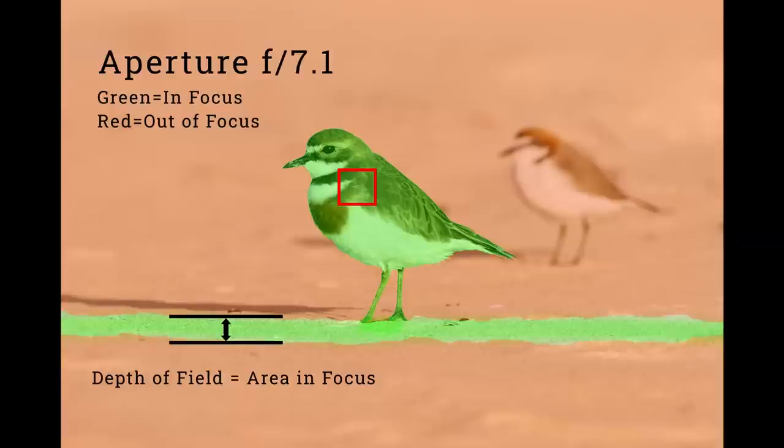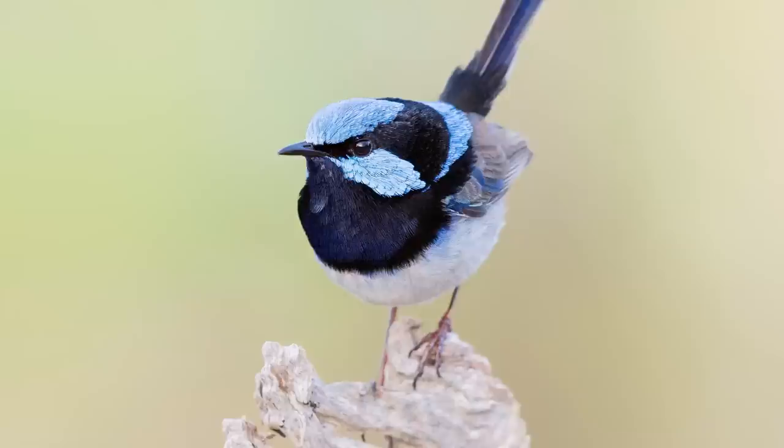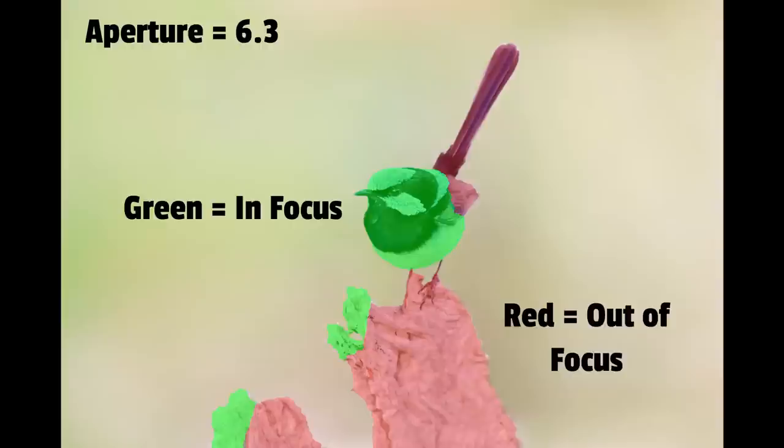The obvious question is why don't we just leave our aperture at its widest or maximum setting and let in as much light as we can? There are two main reasons. First, lenses aren't their sharpest wide open — if your maximum aperture is say f5.6, images are sharpest between f7.1 and f9. The second main factor which aperture controls is your depth of field. The lower the aperture number the narrower the area of focus, which can cause issues as you can see with this superb fairy wren on screen.